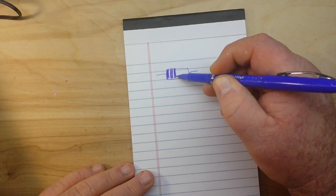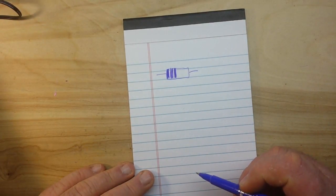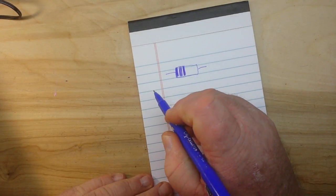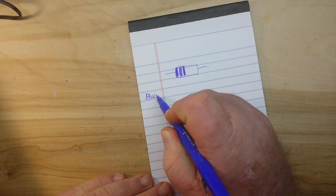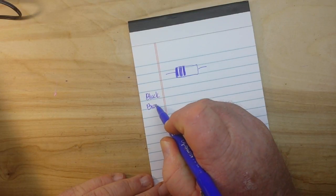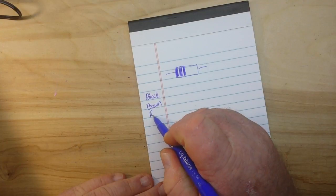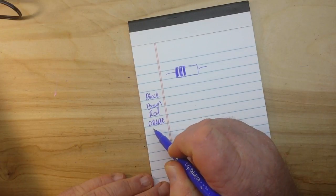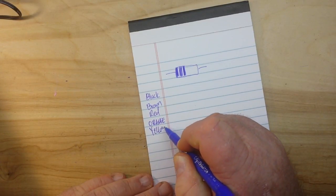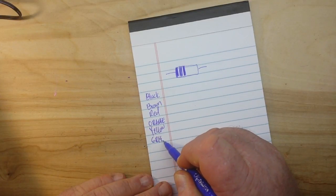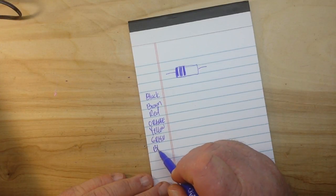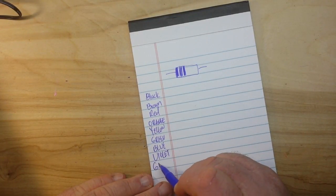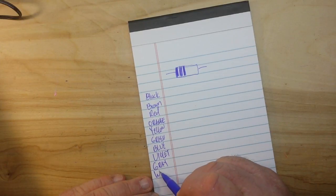Black, brown, red, orange, yellow, green, blue, violet, gray, and white. Now you're saying, well that's a lot of things to try and remember. Yeah it is.